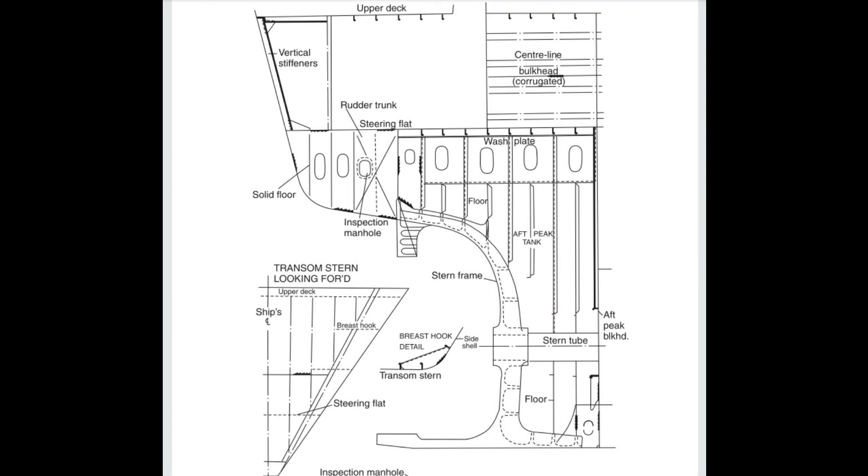The entire tank is divided longitudinally into two by a wash plate with lightening holes. Peak tanks are usually used for ballast or sometimes as fresh water tanks.